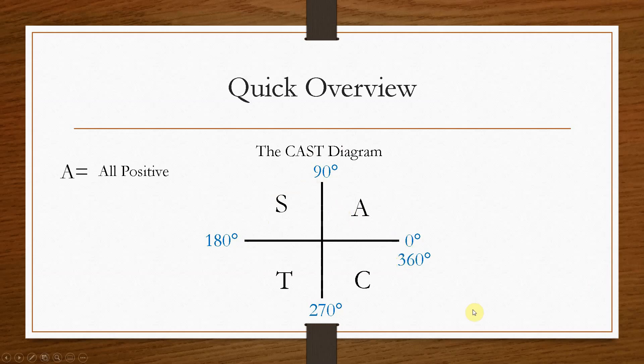So A means that all three, sine, cos and tan, are positive within this quadrant. S, this section, only sine is positive, tan and cos are negative.